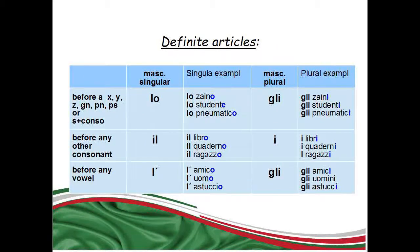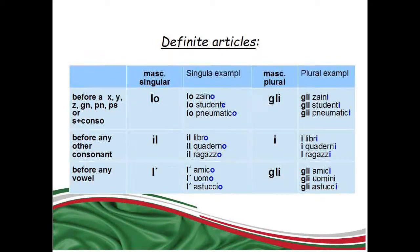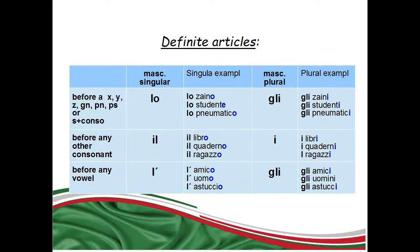L'apostrophe is used before a masculine singular noun starting with any vowel. For example: l'amico, l'uomo, l'astuccio. The plural form of L'apostrophe is GLI: gli amici, gli uomini, gli astucci.